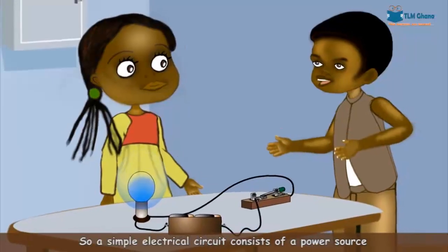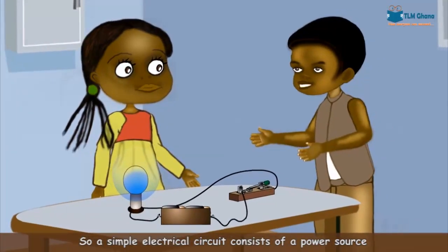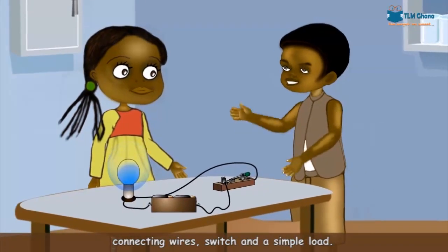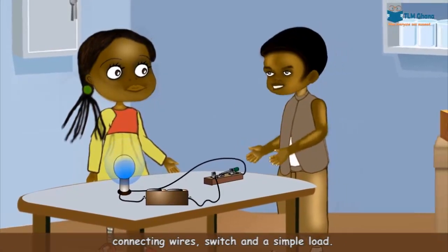So, a simple electrical circuit consists of a power source, connecting wires, switch and a simple load.